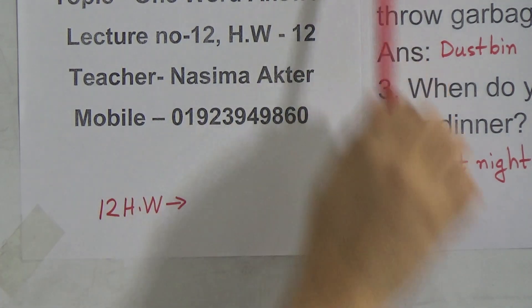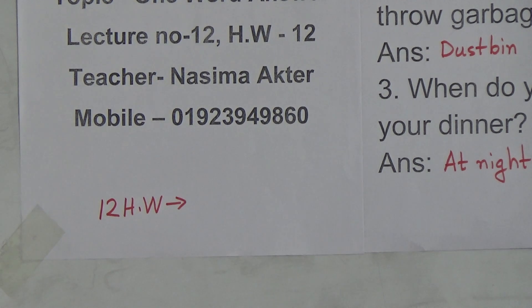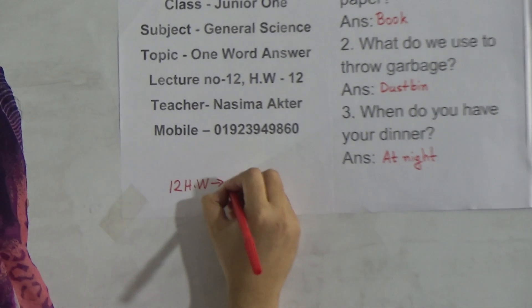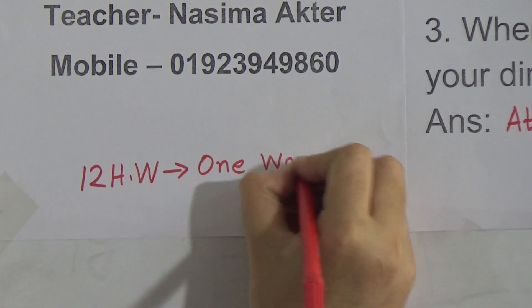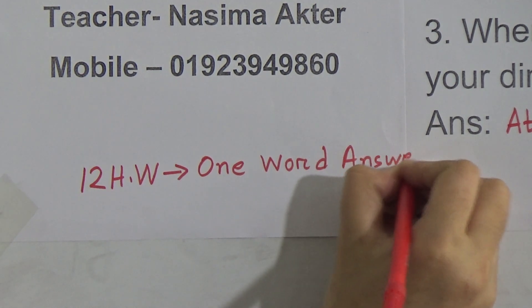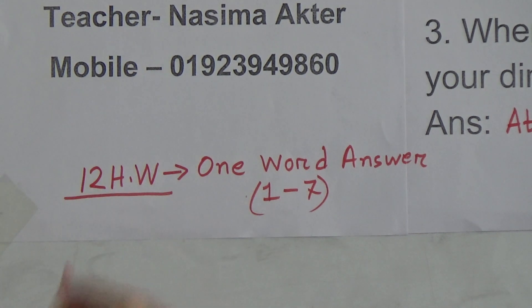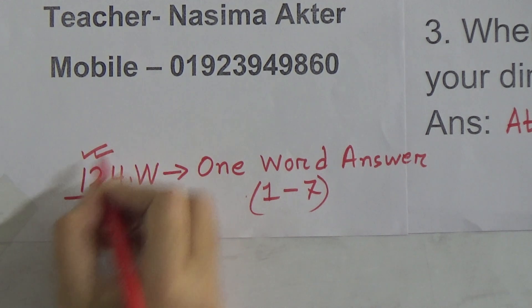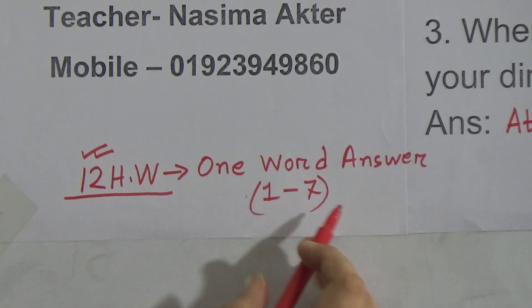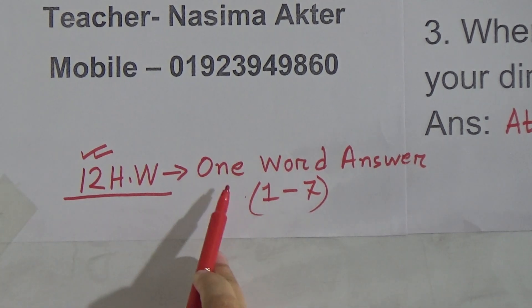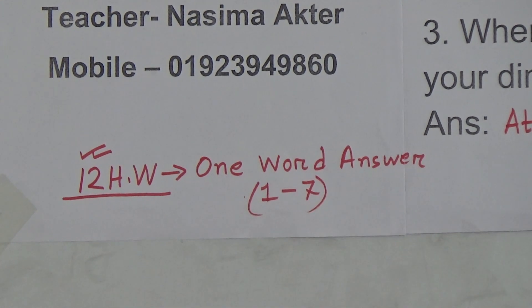So, dear students, I have finished today's topic. Now I will give you HW. Our today's HW number is 12. Here are seven one word questions and answers. So this is your HW, from number one to number seven. I am repeating your HW — this is 12th number HW. When you do your HW, please write down the HW number and the submission date on top of your HW copy. Your HW will be this one word answer, from one to seven.